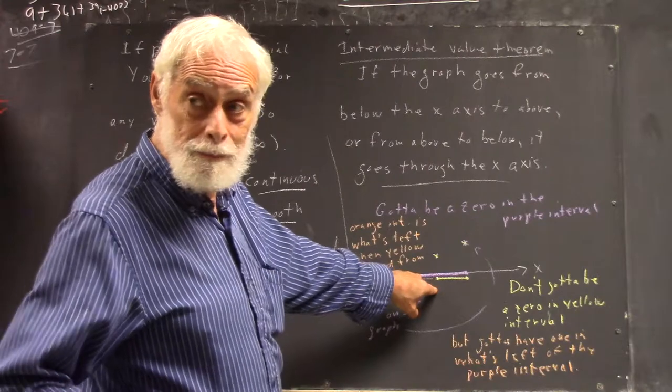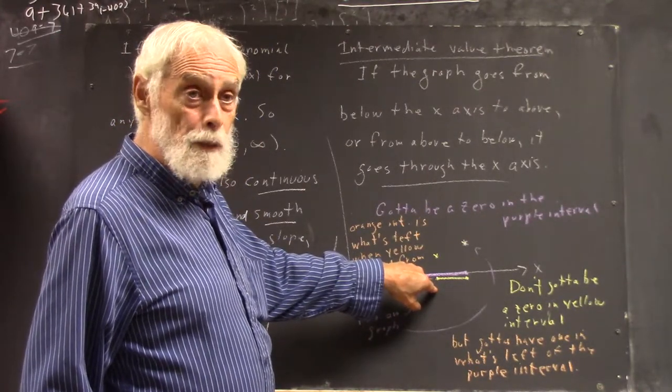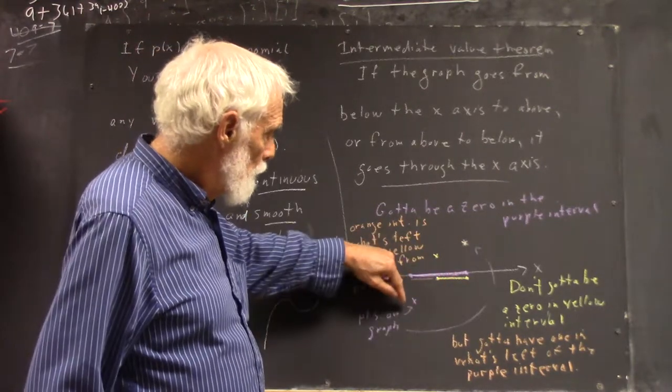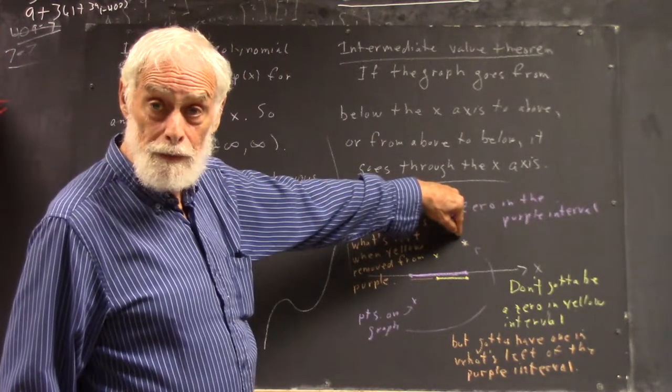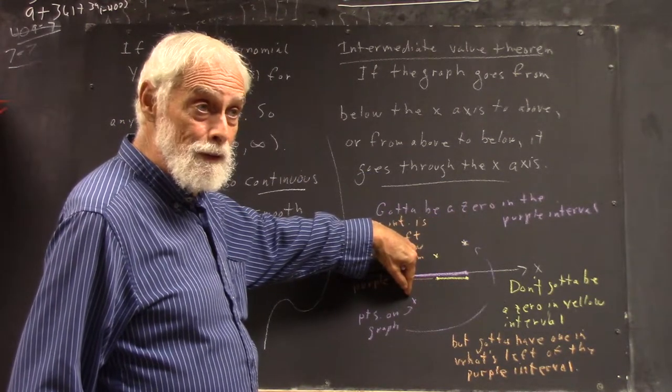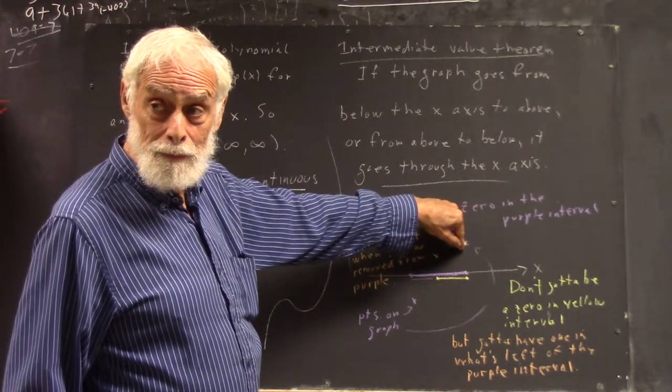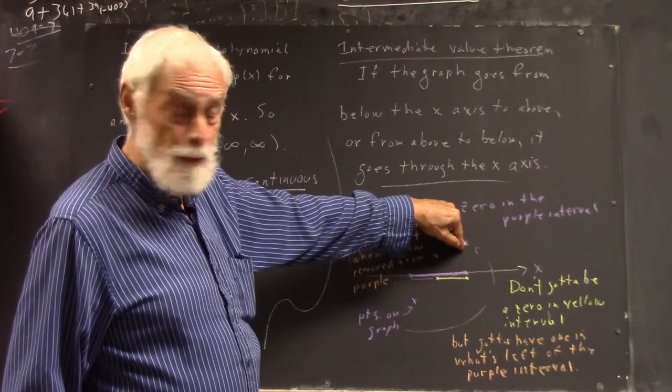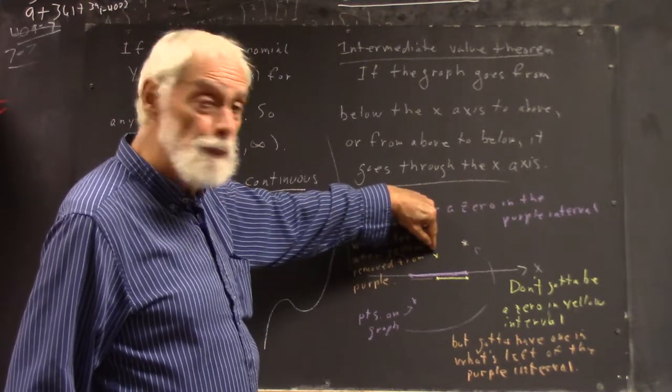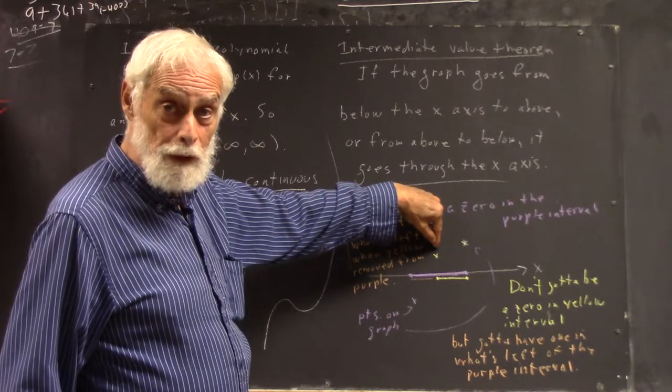If I take the middle of the interval, then I always know that if I find an interval first where we have a point below and a point above at the ends, at one end, the polynomial's negative, at the other end it's positive, I divide that interval in half and see whether it's positive or negative at the new endpoint that we get.